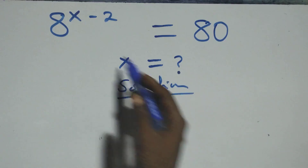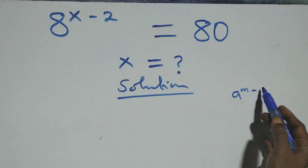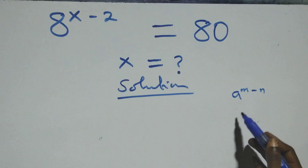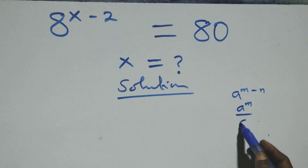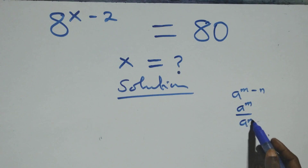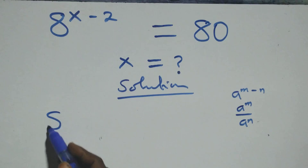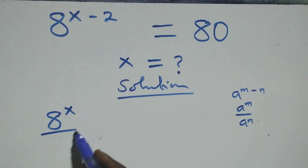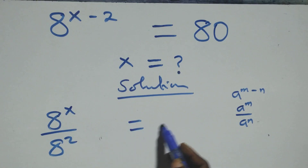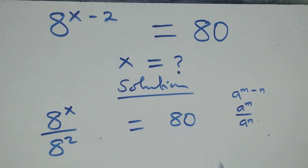And what we have here, this follows the rule where a raised to power n minus n is the same thing as a raised to power n over a raised to power n. So this becomes 8 raised to power x over 8 squared equals 80.